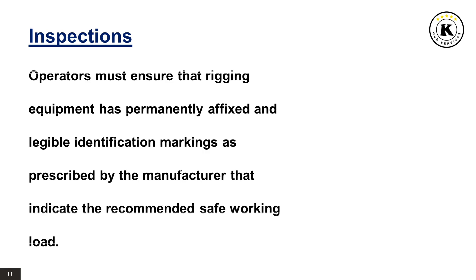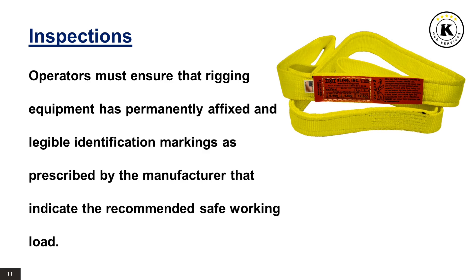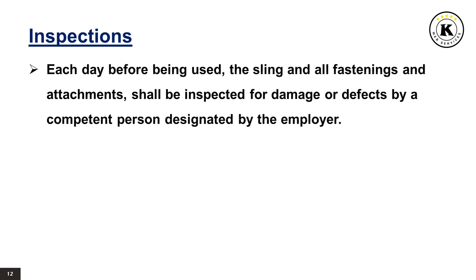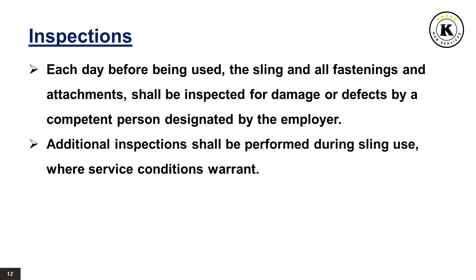Operators must ensure that rigging equipment has permanently affixed and legible identification markings as prescribed by the manufacturer, indicating the recommended safe working load. Each day before being used, the sling and all fastenings and attachments shall be inspected for damage or defects by a competent person designated by the employer. Additional inspections shall be performed during sling use where service conditions warrant.